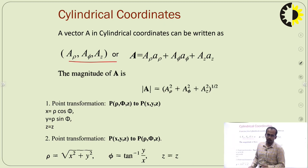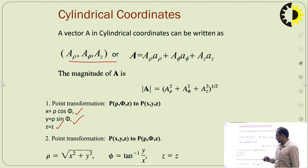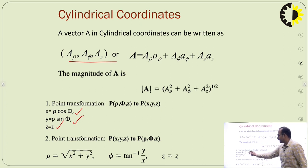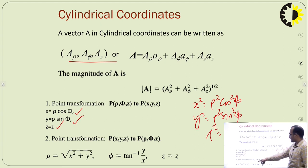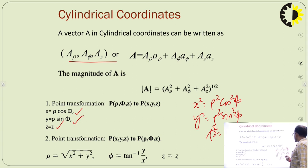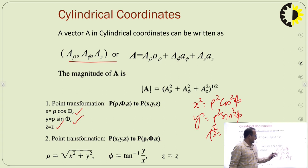The conversion relations are: x equals ρ cos φ, y equals ρ sin φ, and z equals z. Squaring and adding the first two equations gives ρ² equals x² + y², so ρ equals the square root of x² + y². And φ equals tan⁻¹(y/x).